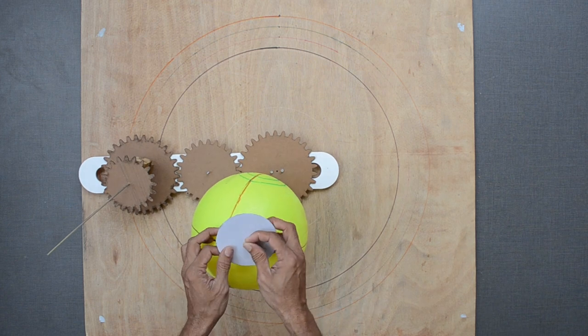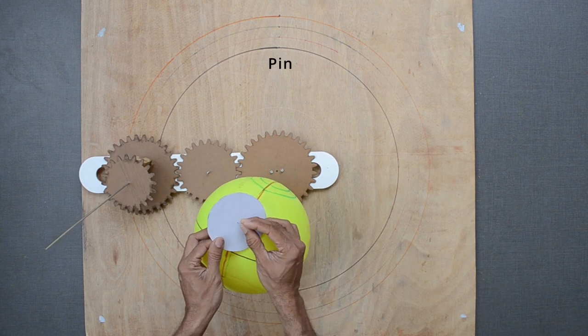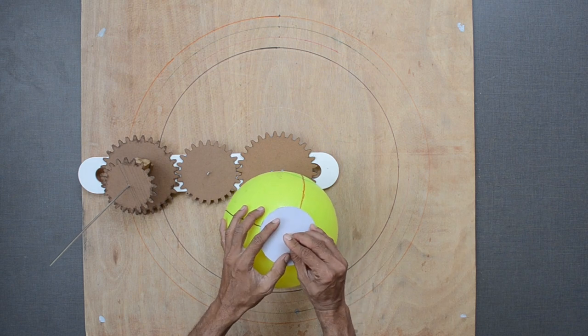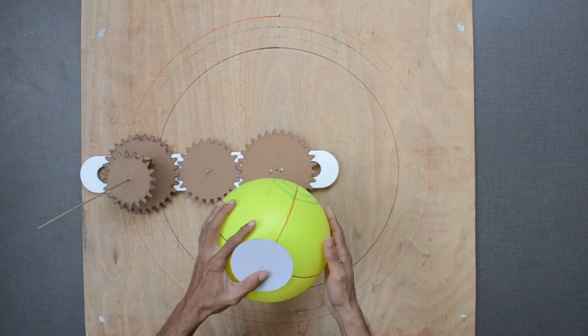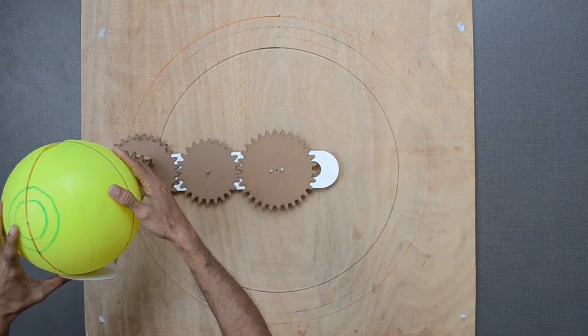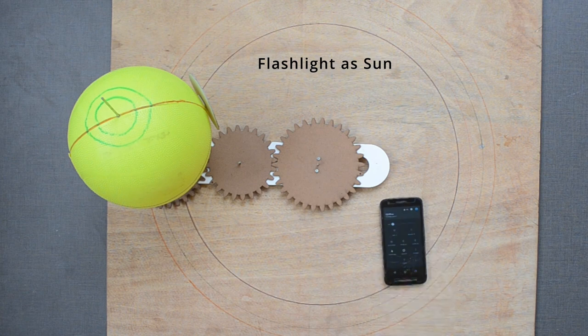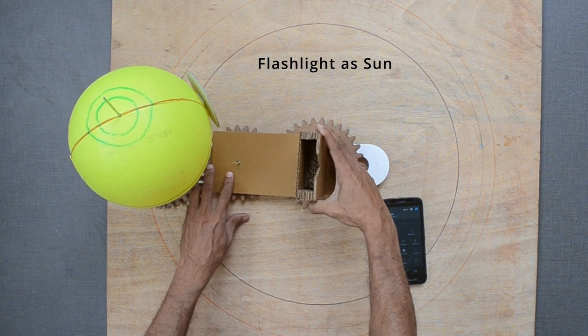Let us place this small paper disc with a pin in the center. The flashlight of the mobile phone will be our sun.